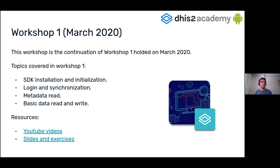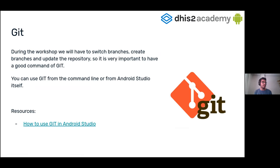This workshop is about more advanced features, like validation rules and program indicators. During the workshop, we are going to use Git a lot — to clone the repository, switch between branches, create new branches, and update the project. It's important to have a good command of it. You can use the command line or use it directly from Android Studio.